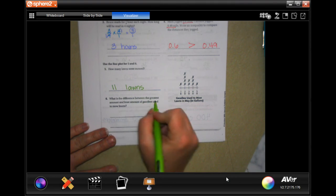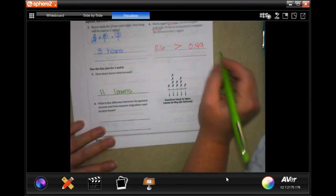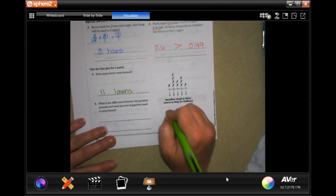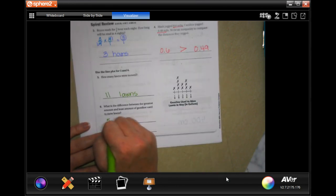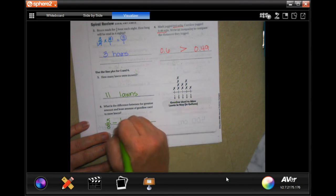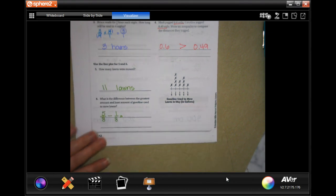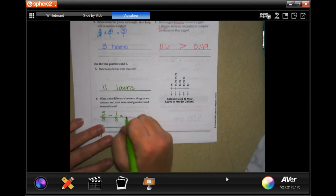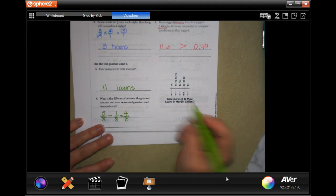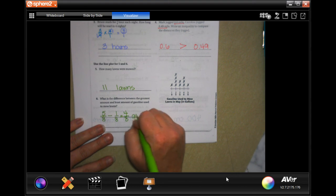What is the difference between the greatest amount and the least amount of gasoline used to mow? Well, the greatest amount was five eighths and the least amount was one eighth. And how you find the difference is you subtract. Well, the denominator stays the same and five minus one is four, so four eighths gallon.